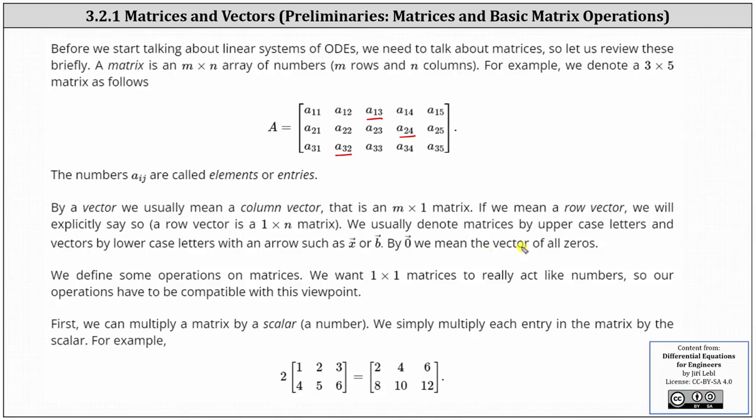By the zero vector, we mean the vector with all zeros. And now let's define some operations on matrices. We want one by one matrices to really act like numbers, so our operations have to be compatible with this viewpoint.